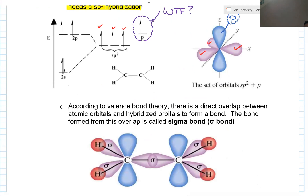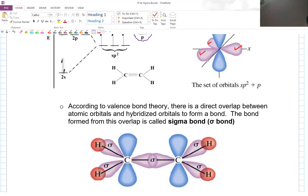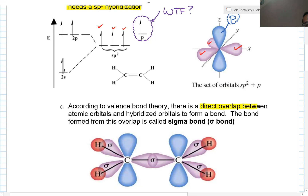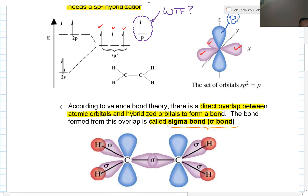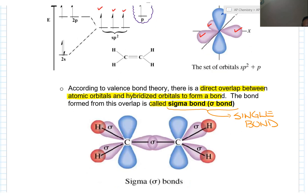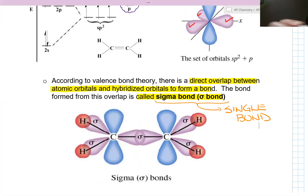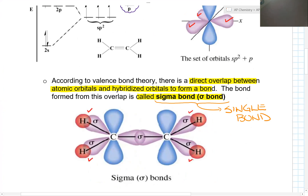According to valence bond theory, there's a direct overlap between the atomic orbitals and the hybrid orbitals to form a bond. The bond formed from this overlap is called a sigma bond. The sigma bond results from a direct overlap, and this sigma bond is the idea of your single bond. For C2H4, there is a direct overlap at each of the five bonding sites — those are all sigma bonds.